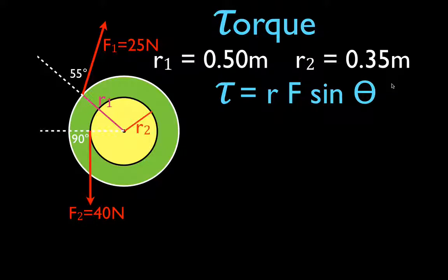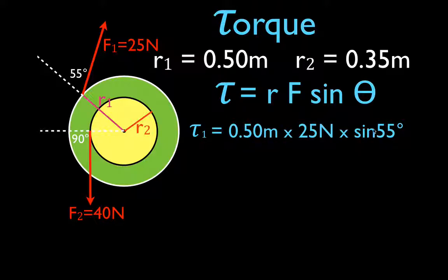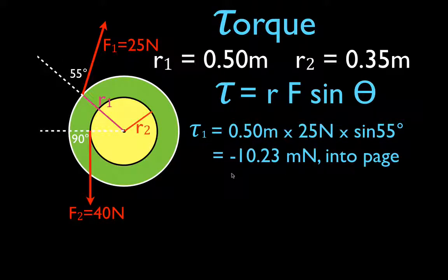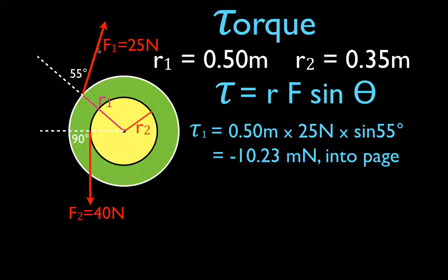For torque number one, we multiply r times F times sine of 55 degrees, which gives 10.23 newton-meters. Torque is a vector quantity with both magnitude and direction. The magnitude is 10.23, and we assign it a negative sign because this force, acting alone, would cause the wheel to rotate clockwise. By convention, forces that cause clockwise rotation produce negative torque.